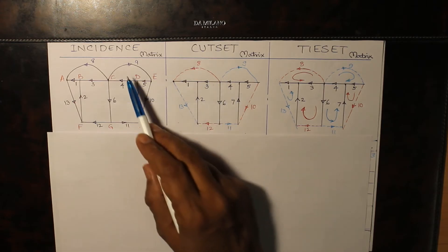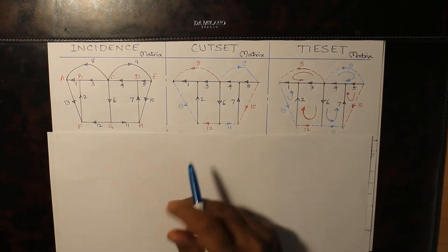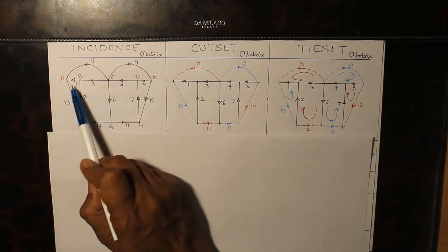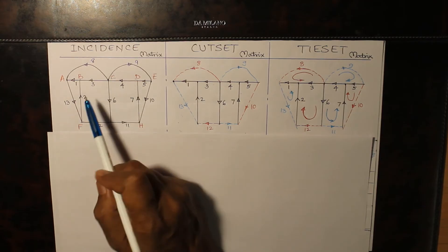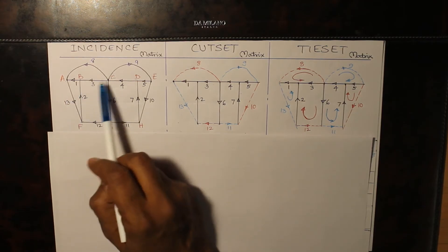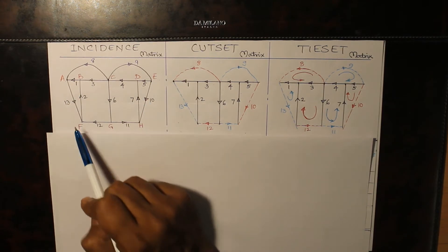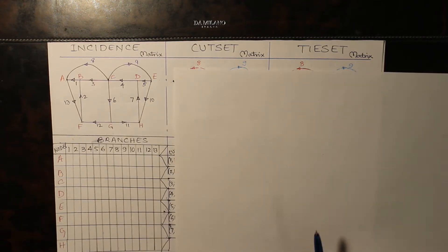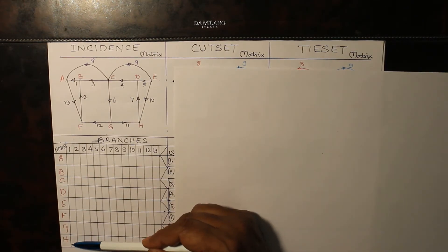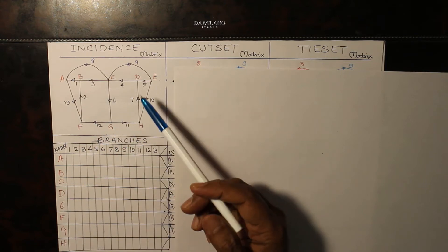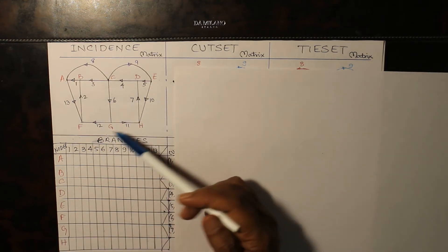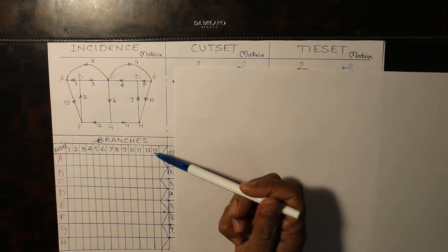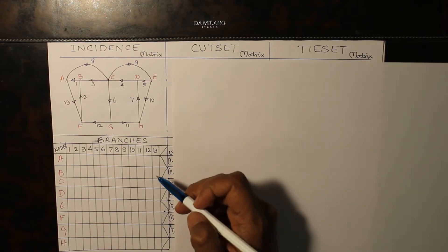So now, for this example incidence matrix, can anyone say how many rows will be there as many number of nodes: 1, 2, 3, 4, 5, 6, 7, 8. So here you have 3, 3, 6 and 2, 8, 8 rows. How many columns? As many number of branches, so 13 columns. And quickly let's do this example.